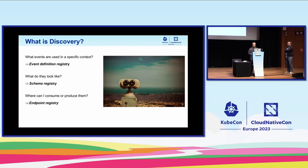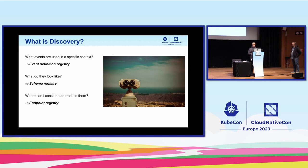Today it's about discovery. What is discovery? In the beginning, people had various expectations, which I'd summarize under three questions. First: what events are around in my context? Context can mean a product, a landscape, or a specific service — it's open to the use case. Second: once you've found an event and know its source, type, and attributes, what does the payload schema look like? That also has applications for code generation and validation. Third: what endpoints are ready to consume or produce your events? That's the endpoint registry.